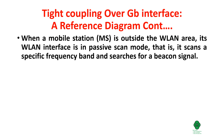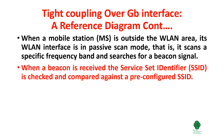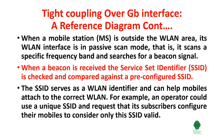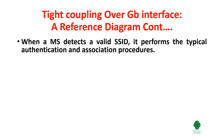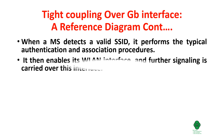When a mobile station is outside the WLAN area, its WLAN interface is in passive scan mode — that is, it scans a specific frequency band and searches for a beacon signal. When a beacon is received, the Service Set Identifier (SSID) is checked and compared against a pre-configured SSID. The SSID serves as a WLAN identifier and can help mobiles attach to the correct WLAN. When a mobile station detects a valid SSID, it performs the typical authentication and association procedures, then enables its WLAN interface.